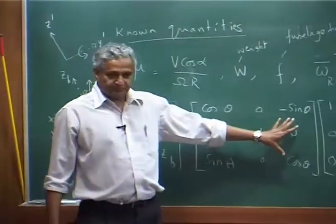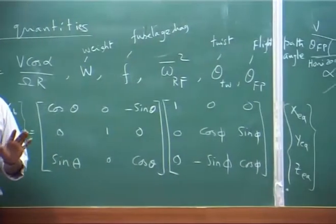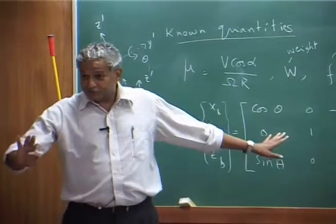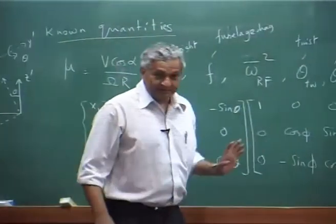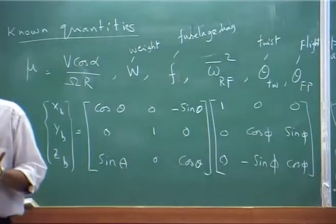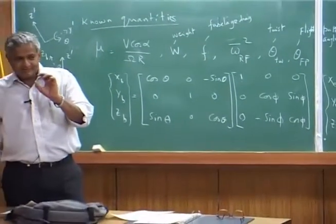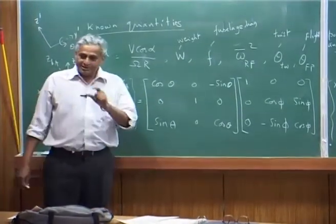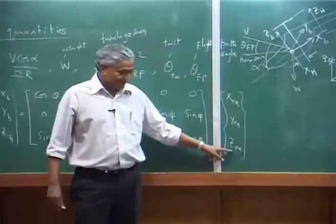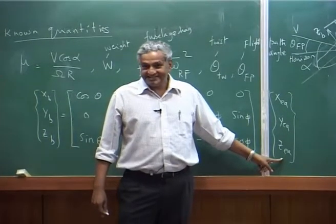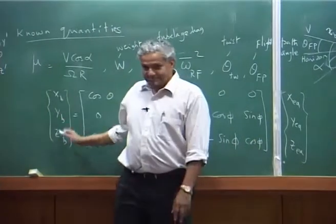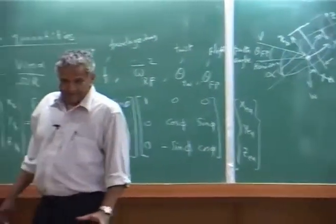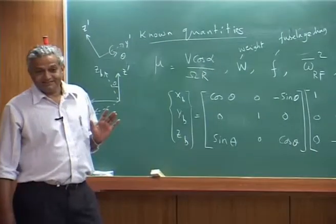Please note that I still do not know the pitch and roll angles, but I will not make any small angle approximation — that is very important. When you have large angles, they are not vectors; you have to follow this transformation. The weight acts along the earth axis system. That is why you have to transfer the weight into the body system, and then you can write all your equilibrium equations in the body system.